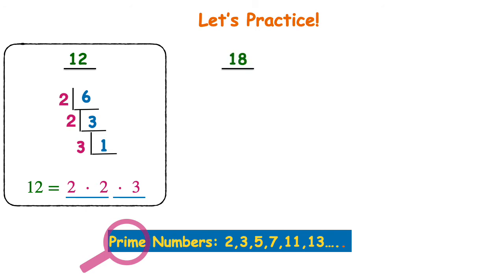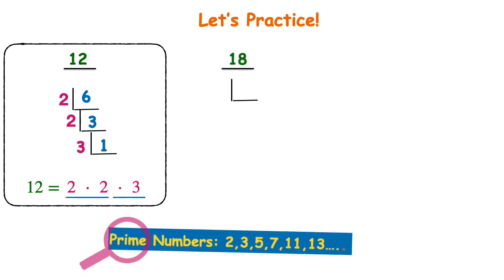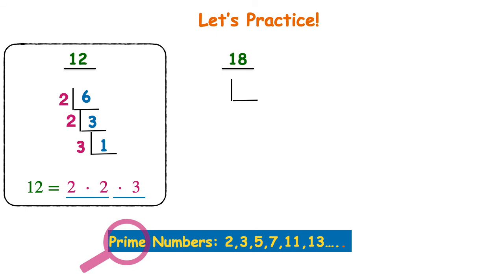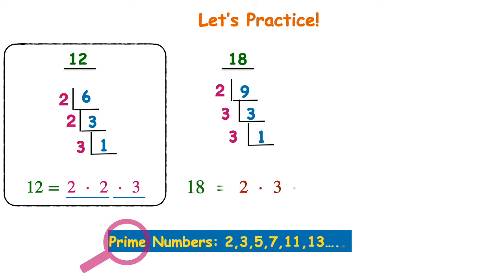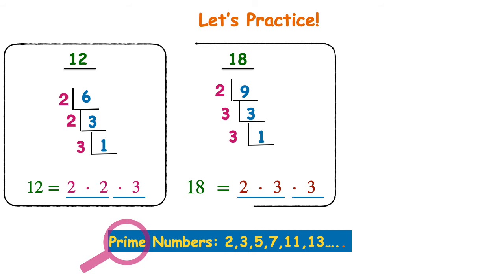Let's try the number 18. Again I start with my L. Looking at my prime numbers, I ask: does 2 go into 18? Yes, it's an even number, and 2 times 9 gives me 18. I continue down the ladder. 2 does not go into 9, but 3 does — 3 times 3 gives me 9. I keep going. Does 3 go into 3? Yes — 3 times 1 is 3. Once I've reached 1, I'm done. The prime factors of 18 are 2 times 3 times 3. Check: 2 times 3 is 6, and 6 times 3 is 18.